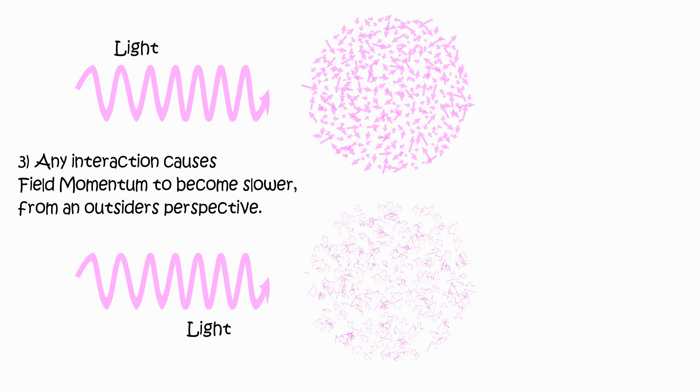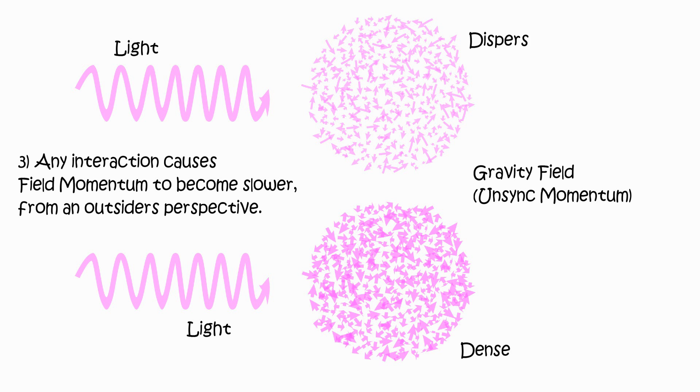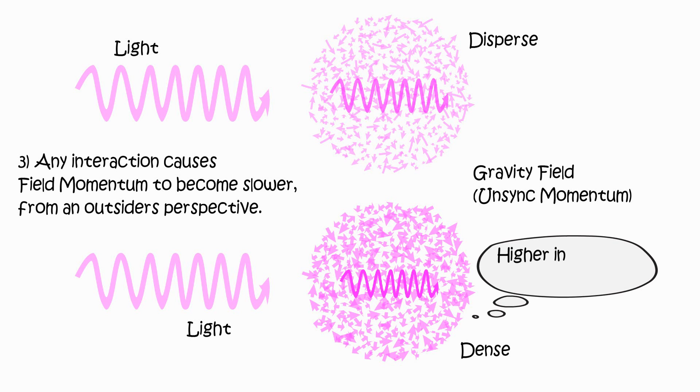Any interaction causes field momentum to become slower from an outsider's perspective. Any interaction means momentum is traveling in more deviated routes, as momentum is transferred to the surrounding fields and back, decreasing its overall speed from an outsider's perspective.